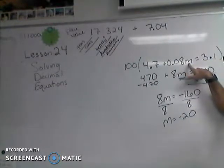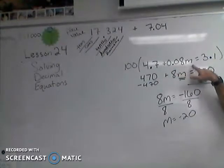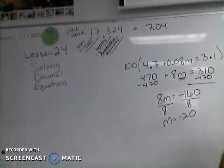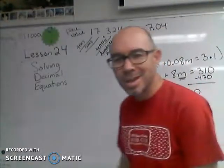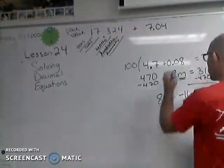So M equals negative 20. That is the right answer that goes along with this original equation. We could plug in negative 20 right here, and 4.7 times M plus 0.08 times negative 20 would equal 3.1. I pretty much guarantee you can do it on your calculator just to be sure.